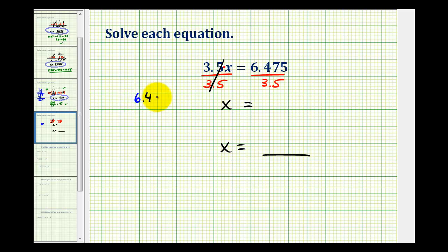So 6.475 divided by 3.5. So the first thing we need to do is move the decimal point to the right, so our divisor is a whole number. So I'll move this once to the right, and we'll do the same to the dividend. So move the decimal point here, and then straight up into our quotient. And now we'll divide as we normally would.